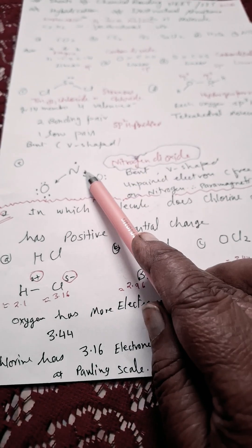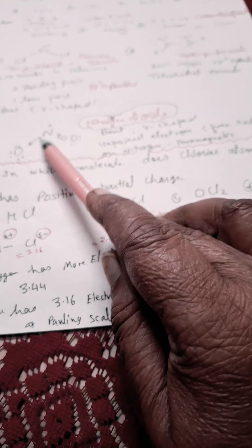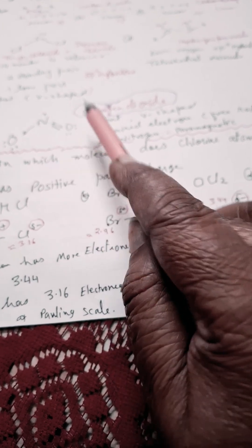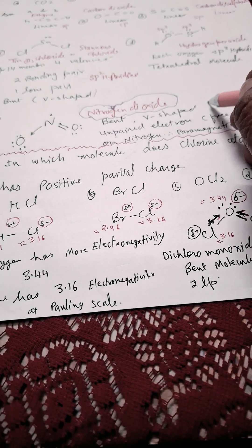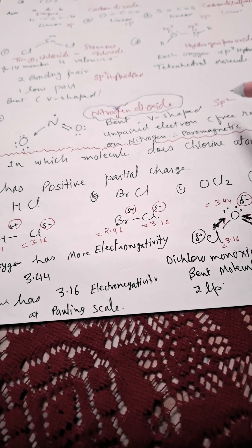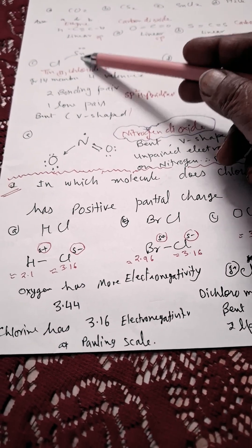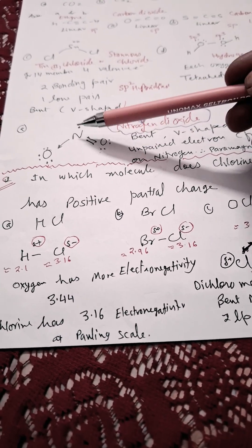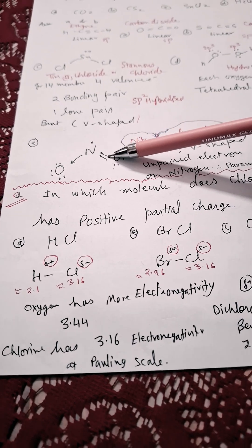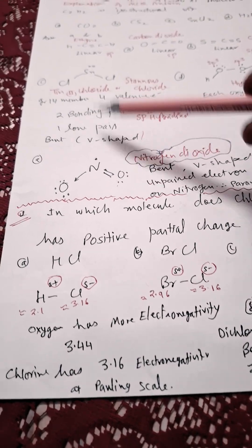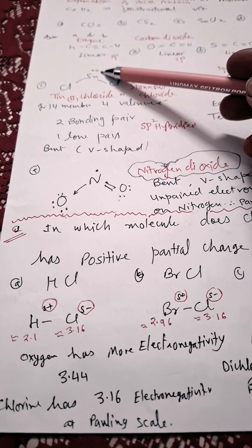So it is also SP2 hybridized and V-shaped. Which of them are SP2 hybridized? SnCl2 and NO2, which is having free radical. This NO2 is acting as a free radical, it is having one unpaired electron. Sn is having one lone pair of electrons, that is why it is bent structure.